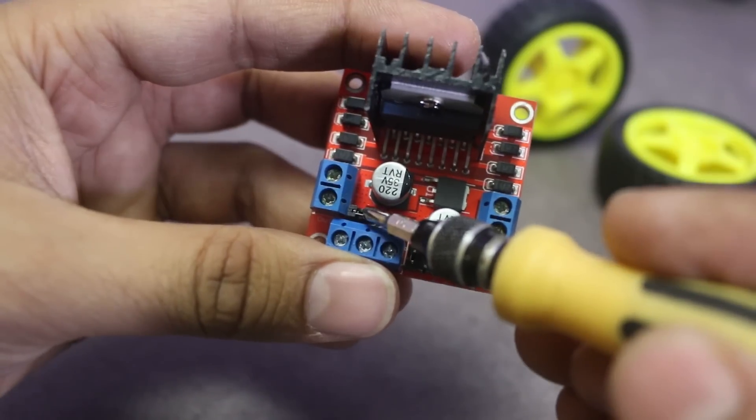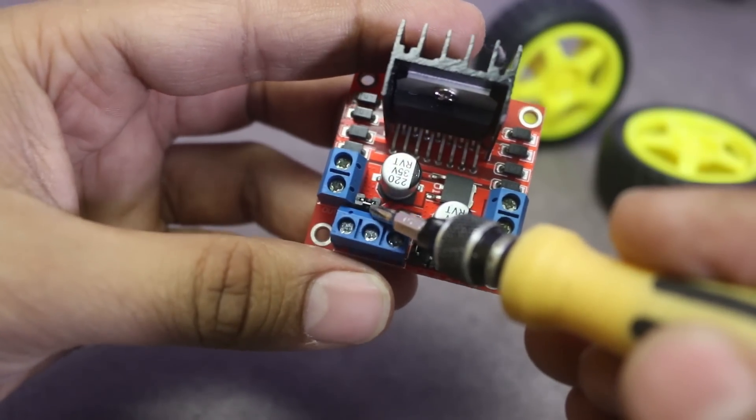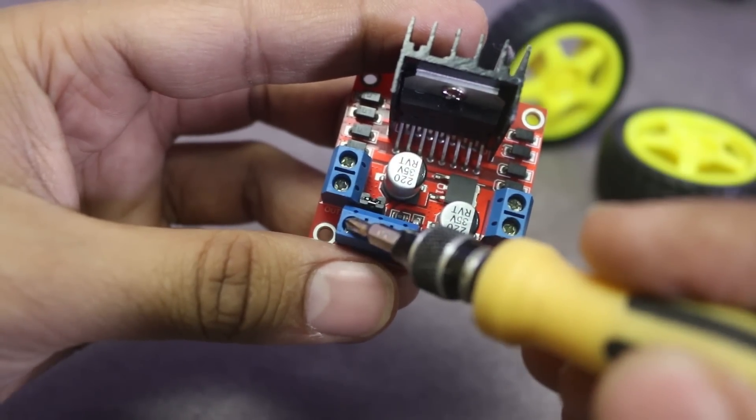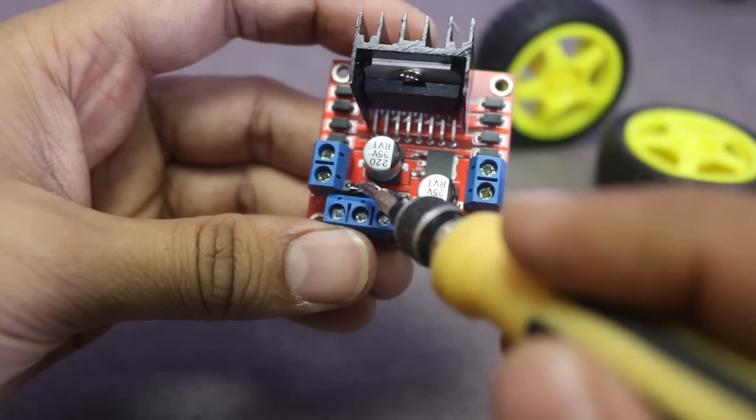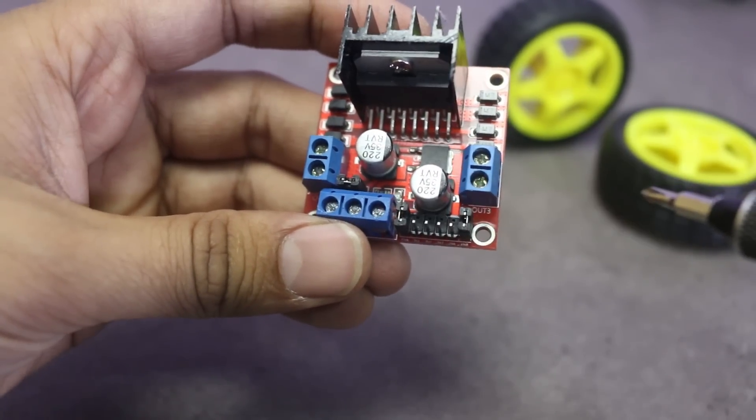That is why it is compulsory to remove the jumper if voltage is more than 12. And yes, this is the 5V output. You can use this output to power your Arduino board or any other microcontroller.